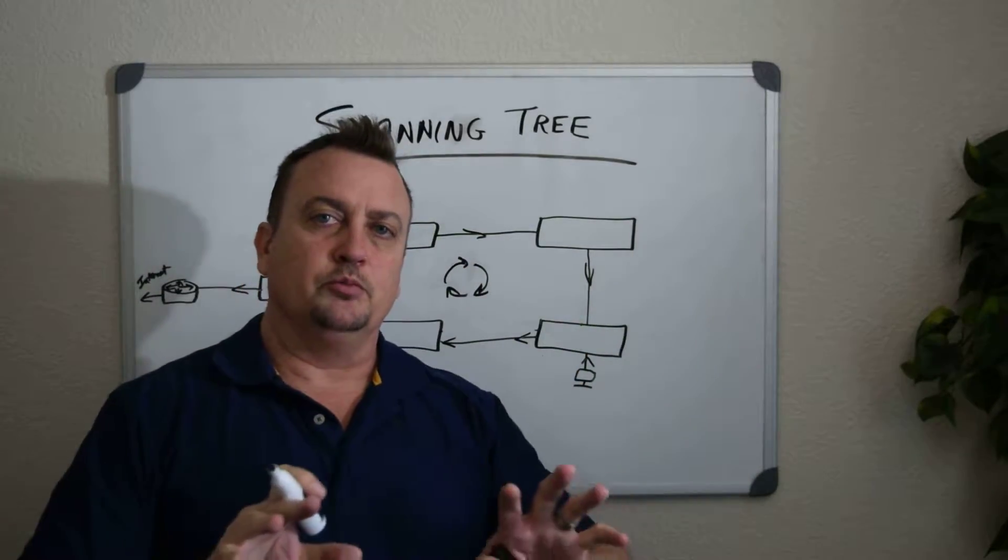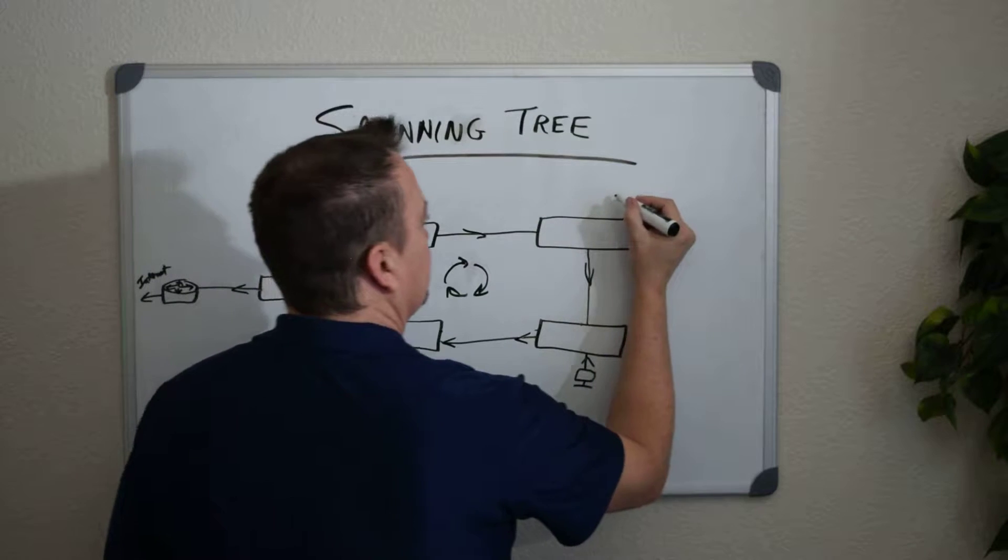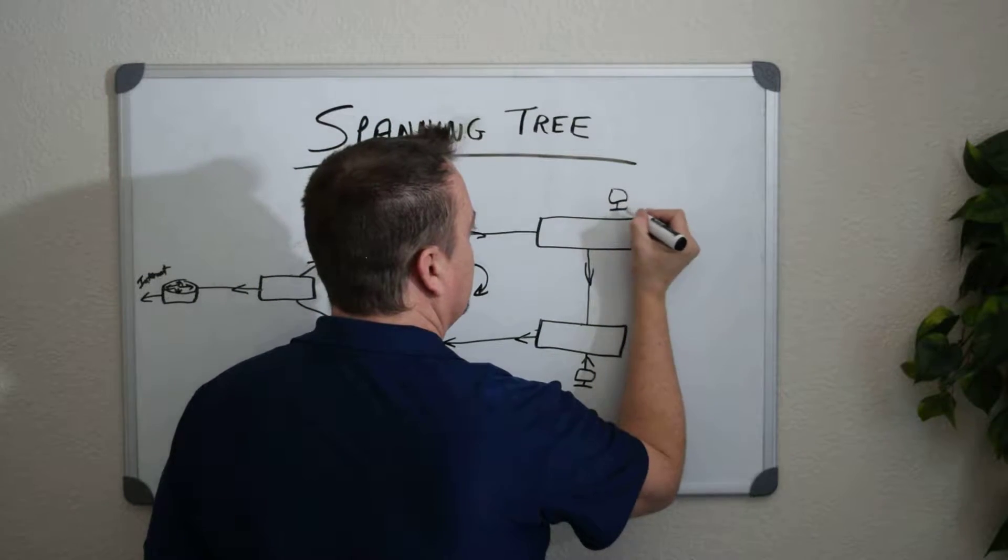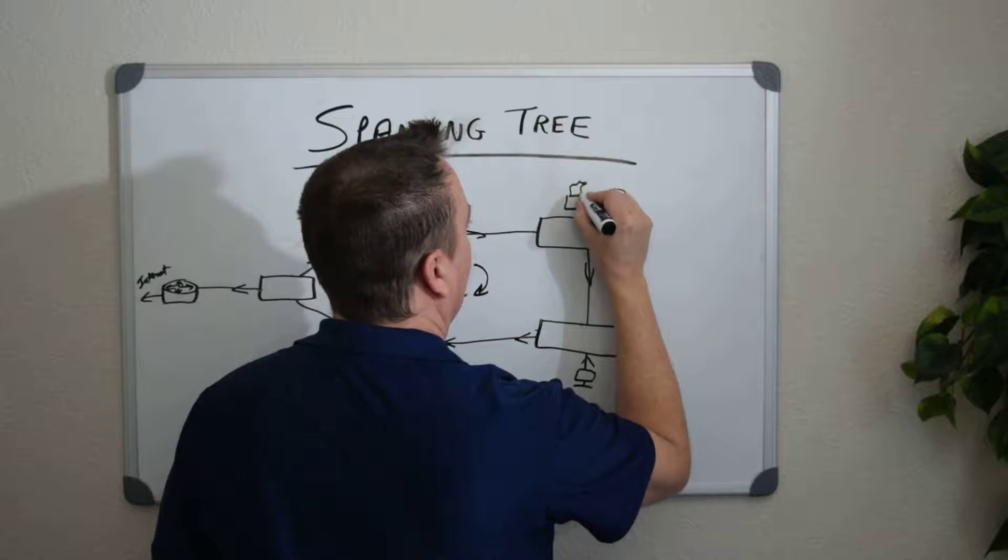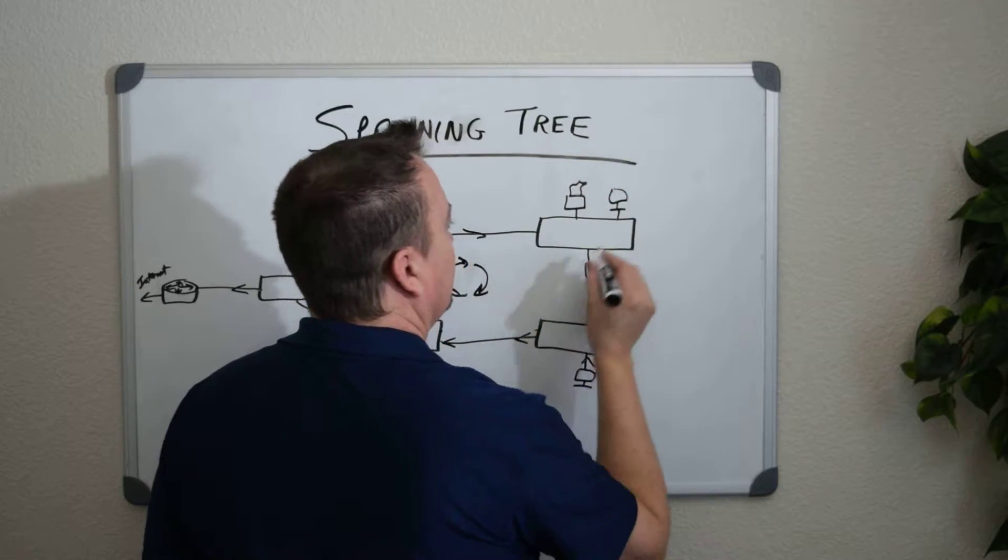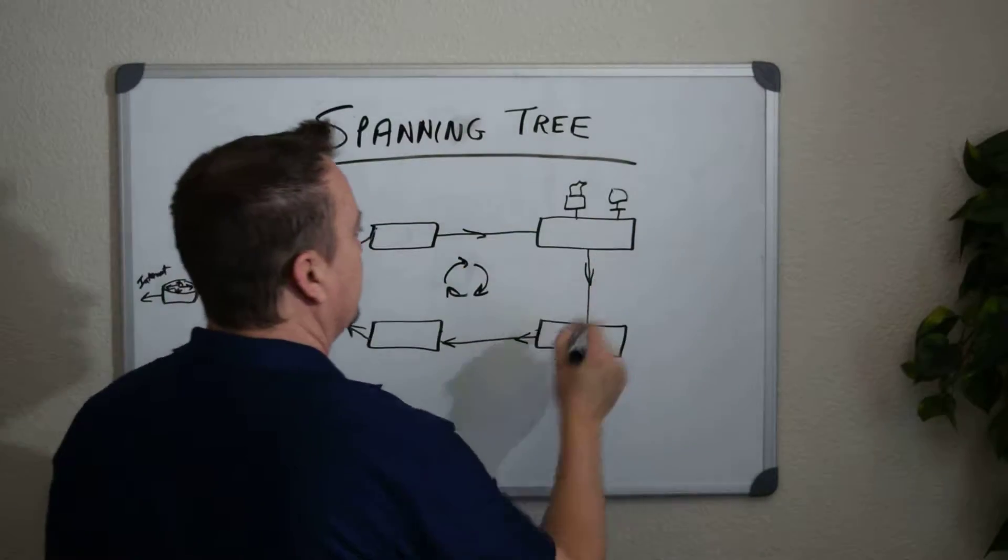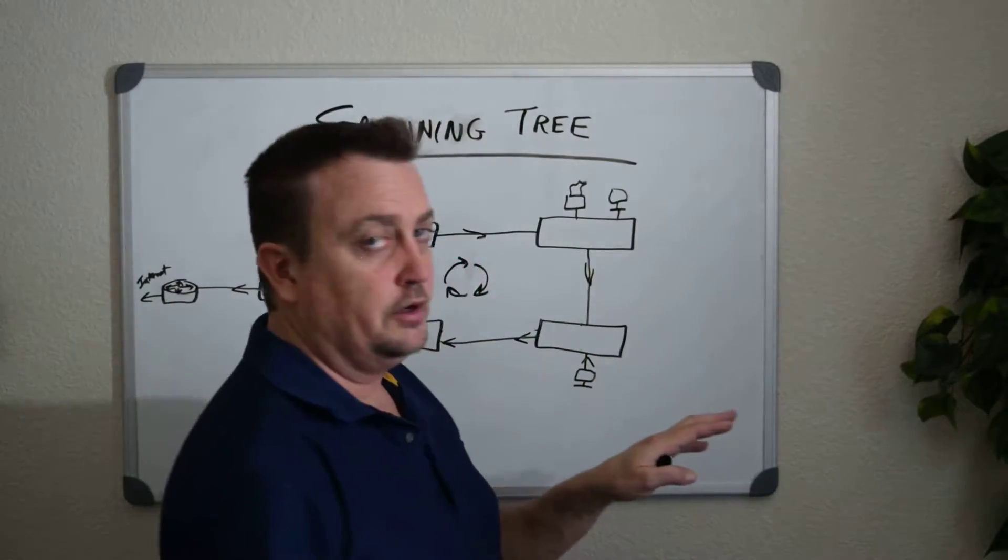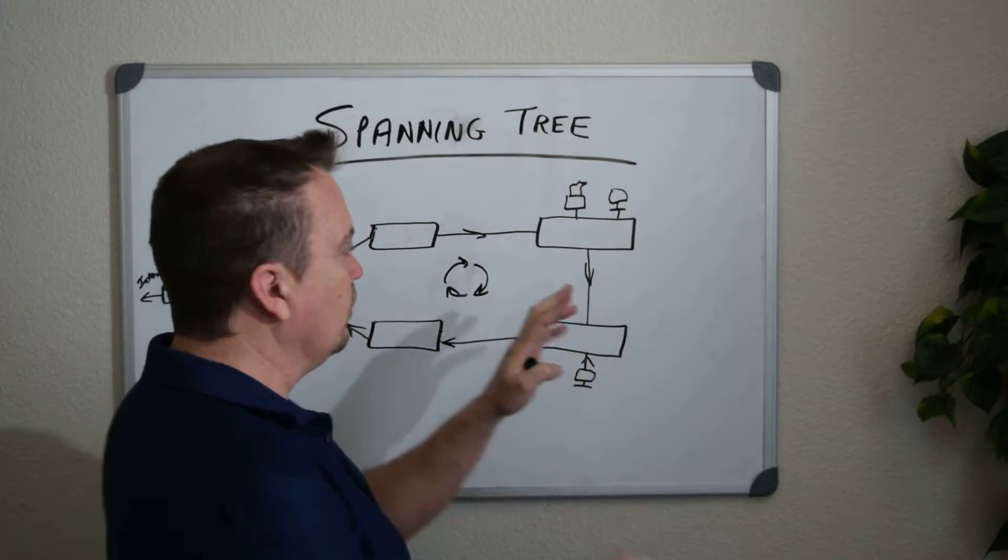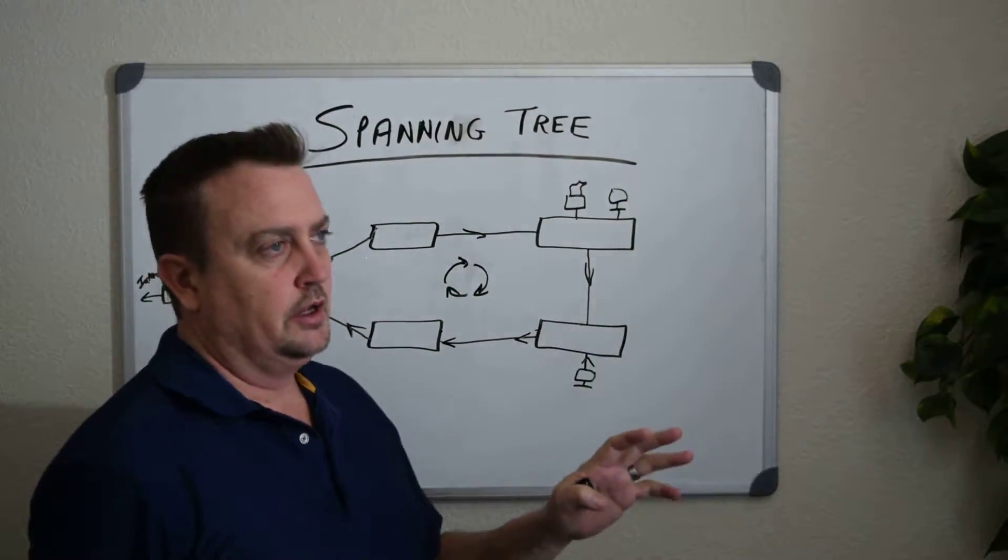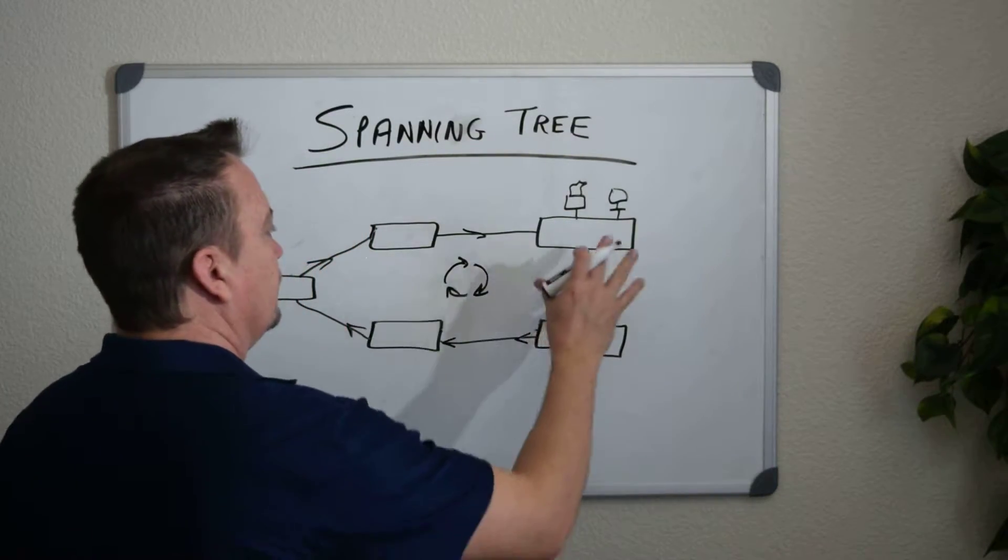And broadcasts begin to dominate your network. Other network traffic, like say you have other workstations, other devices on your network, you might have a printer up here. These are all connected. They can't communicate on the network because all that the network is taking care of when you have a loop is broadcast, broadcast, broadcast. They're dominating all the traffic. In fact, they will essentially lock down your network at some point. So that's broadcast radiation.